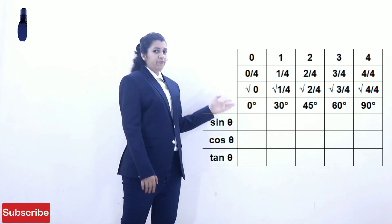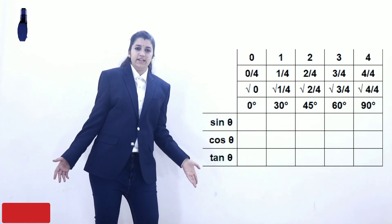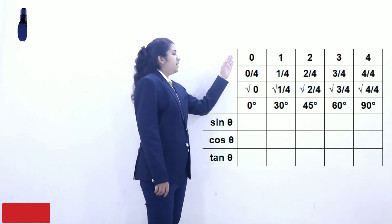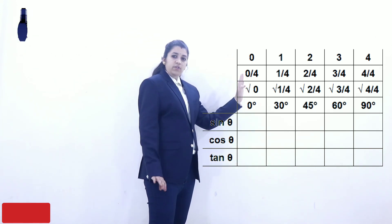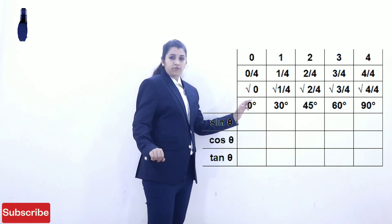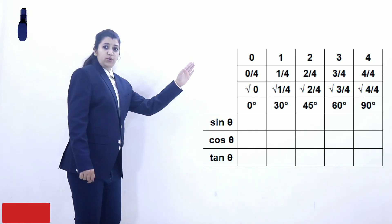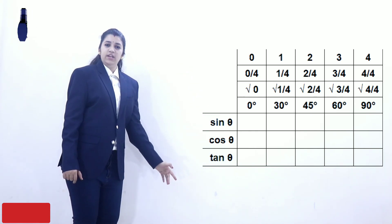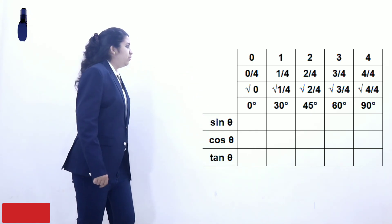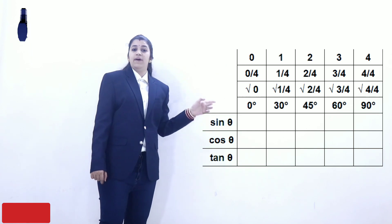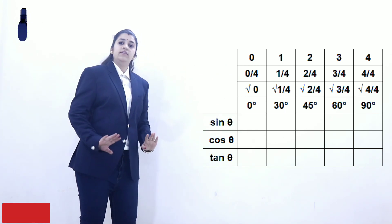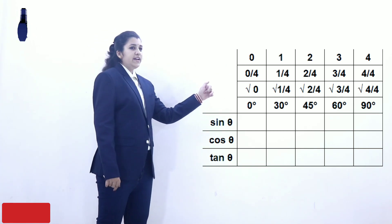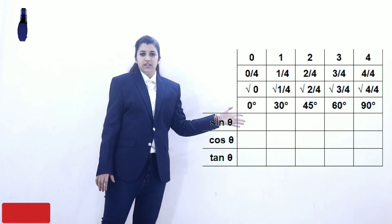0 divided by 4 is 0. 1 divided by 4 is 1/4. 2 divided by 4 is 1/2. 3 divided by 4 is 3/4. And 4 divided by 4 is 1.